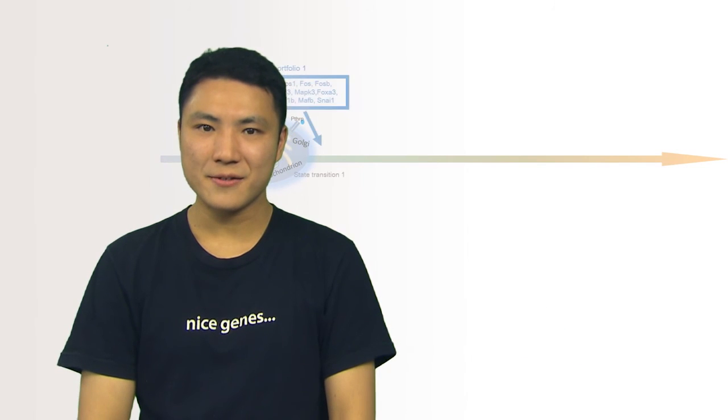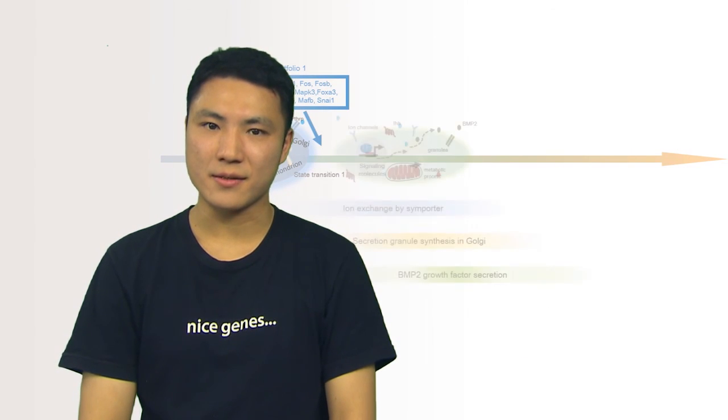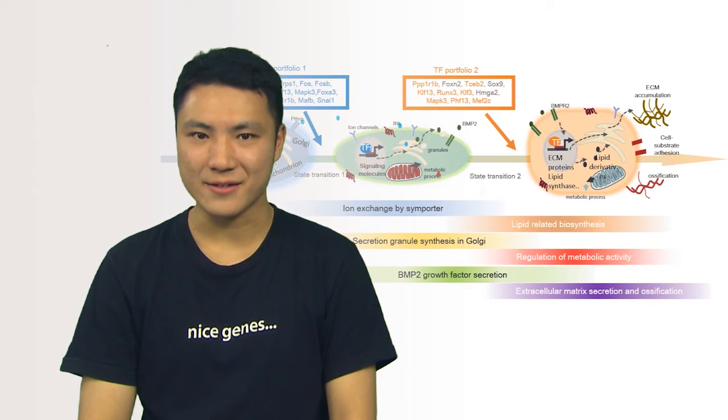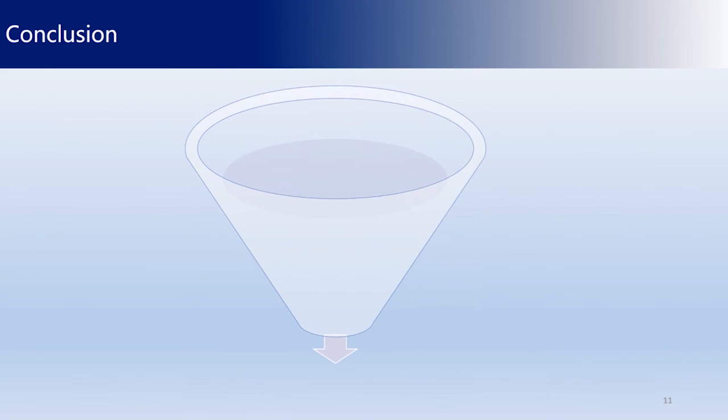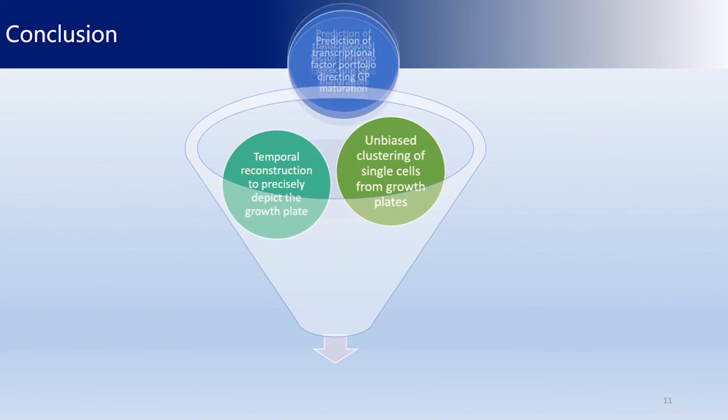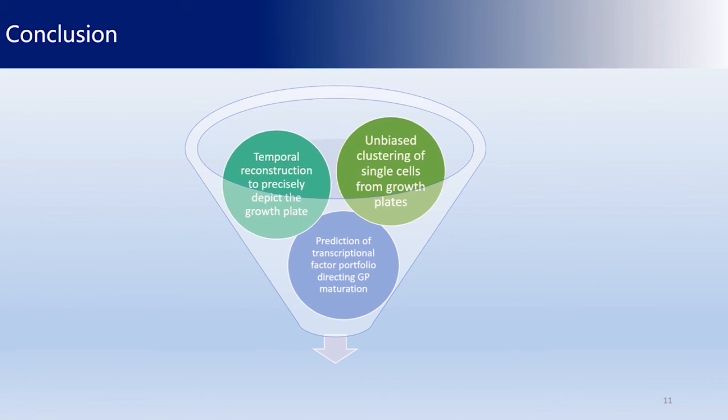To recapitulate, we developed the pipeline CNOVA using the combination of computational models to successfully reconstruct the growth plate development based on the transcriptome of 217 single cells. Our model enhances the systematic understanding of the complexity of growth plate development. In addition, our bioinformatics pipeline should be easily applicable to other tissue or organ developmental processes. Thank you for watching.